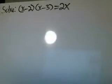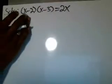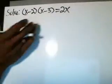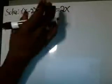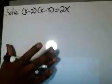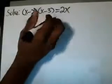Hey guys, what's up? Team 3D Math. Showing you guys how to solve this system here. You have x minus 2 times x minus 3 equals 2x. To solve simply means to make this whole thing equal to 0, to then factor and solve for each x individually.